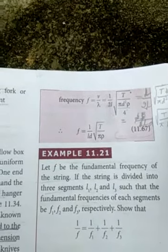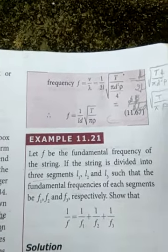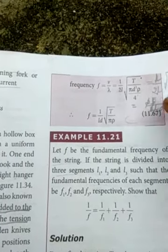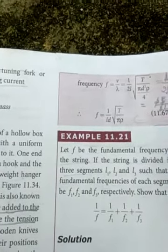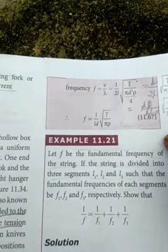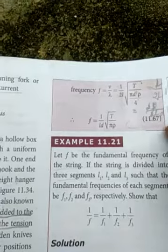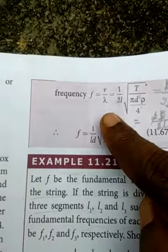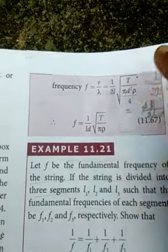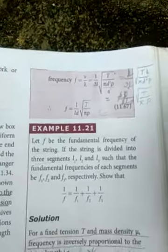So that one we are taking means root of T by pi rho. So here coming to the 2. So 2 into 1 is 2 divided by 2LD. 2LD. So 2 2 cancel. 1 by LD. Now that coming to the answer. 1 by LD root of T by pi rho. Thank you children.